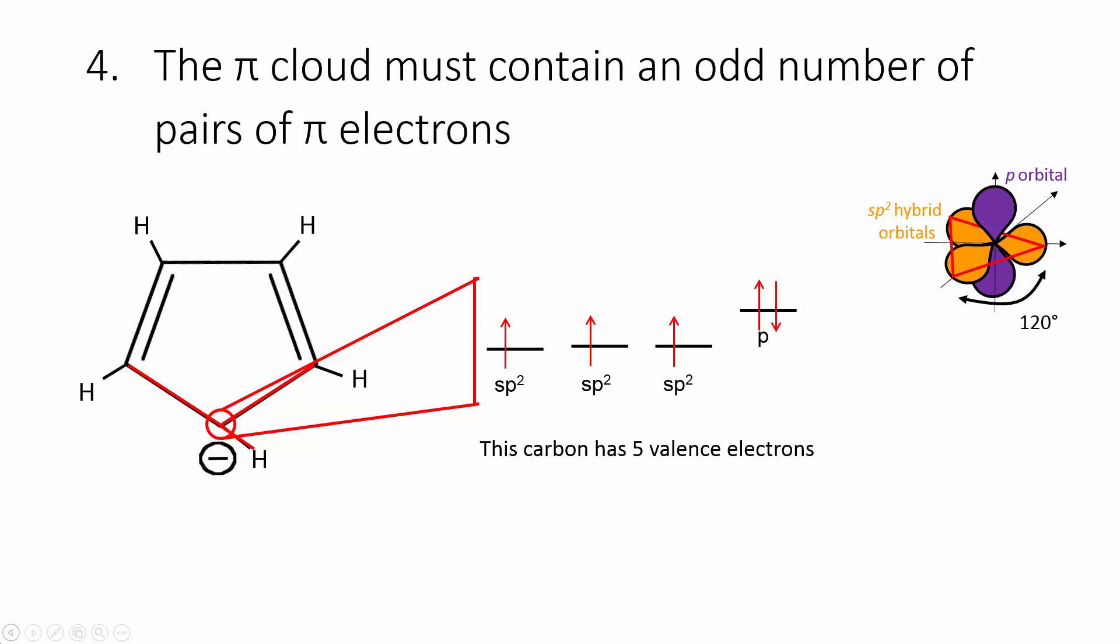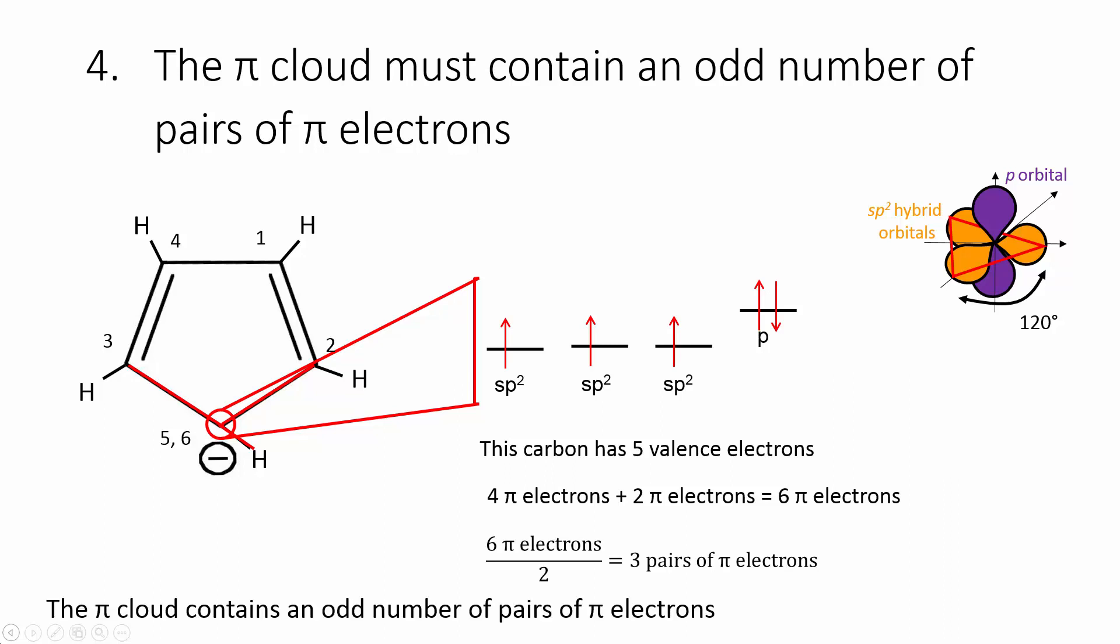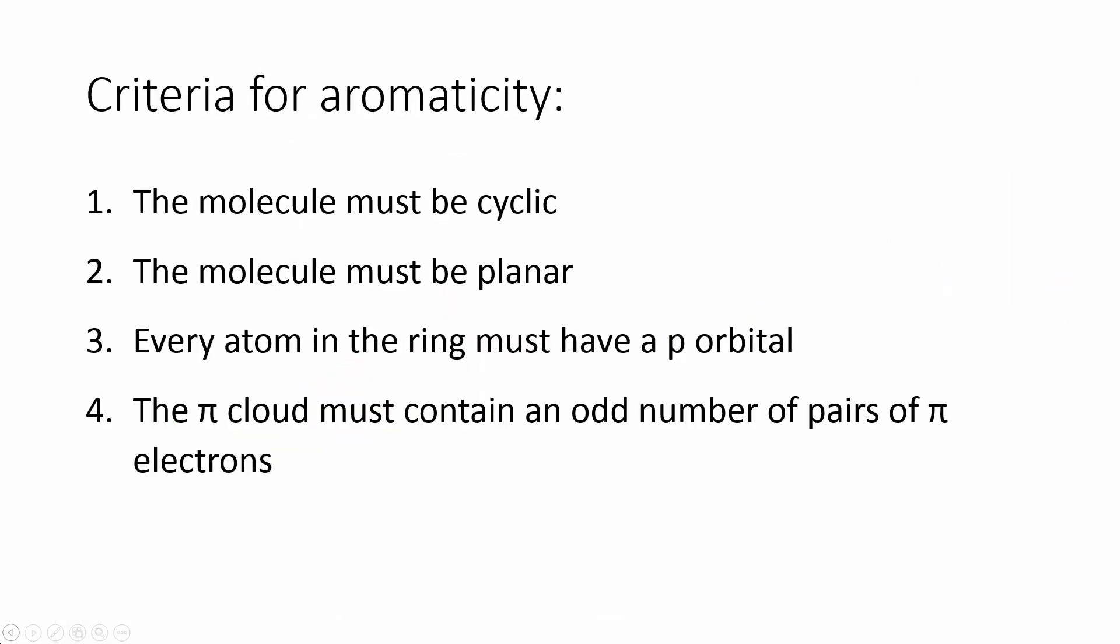So assuming that my math is correct, four π electrons from the first four carbons plus two π electrons from the bottom carbon makes for a total of six π electrons. Six divided by two is equal to three, which is an odd number. And thus we meet our fourth and final requirement. Since we've met all four of our requirements, we can then conclude that this is an aromatic molecule.